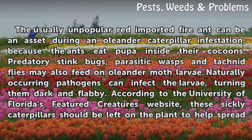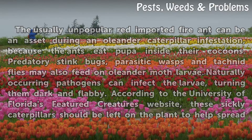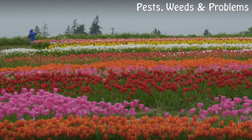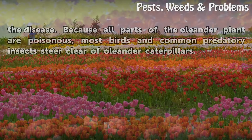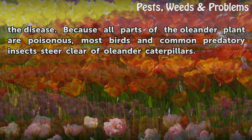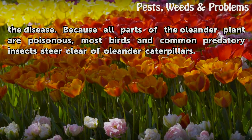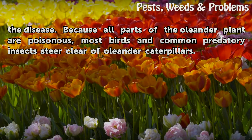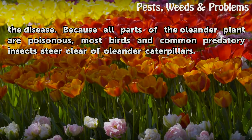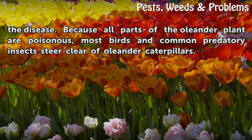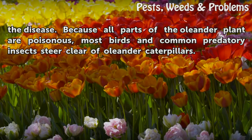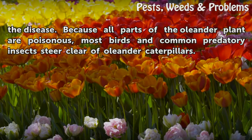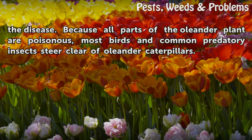According to the University of Florida's Featured Creatures website, these sickly caterpillars should be left on the plant to help spread the disease. Because all parts of the Oleander plant are poisonous, most birds and common predatory insects steer clear of Oleander caterpillars.